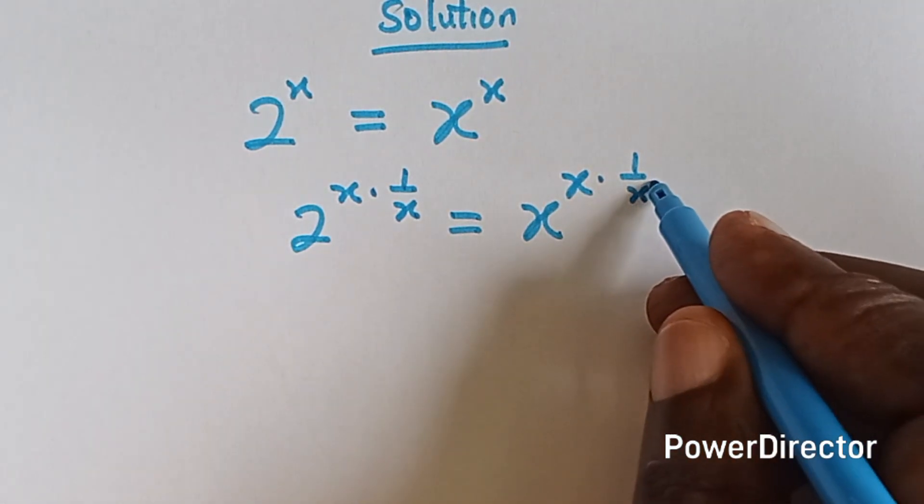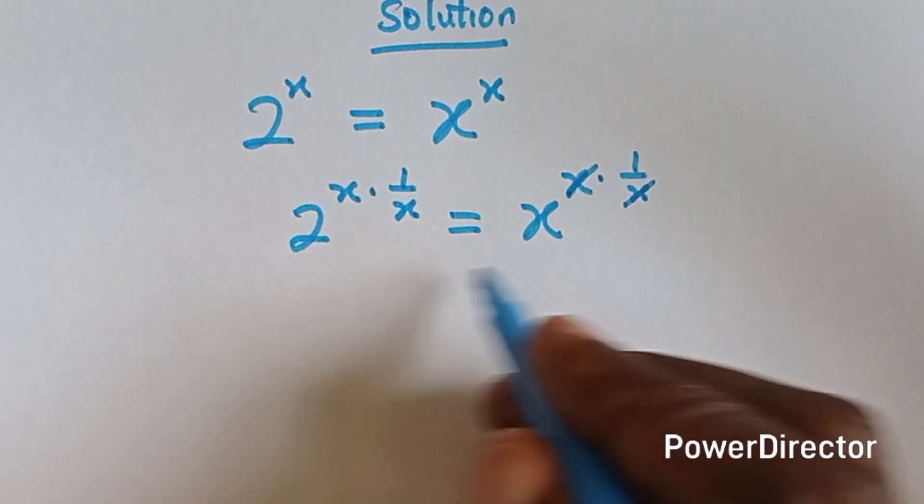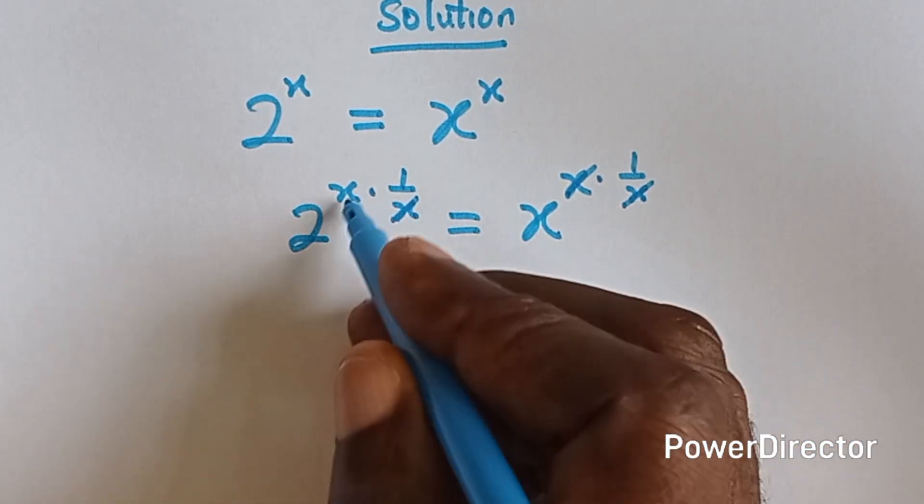All right, so 1 over x, this x will cancel this x, and also this x here will cancel this x.